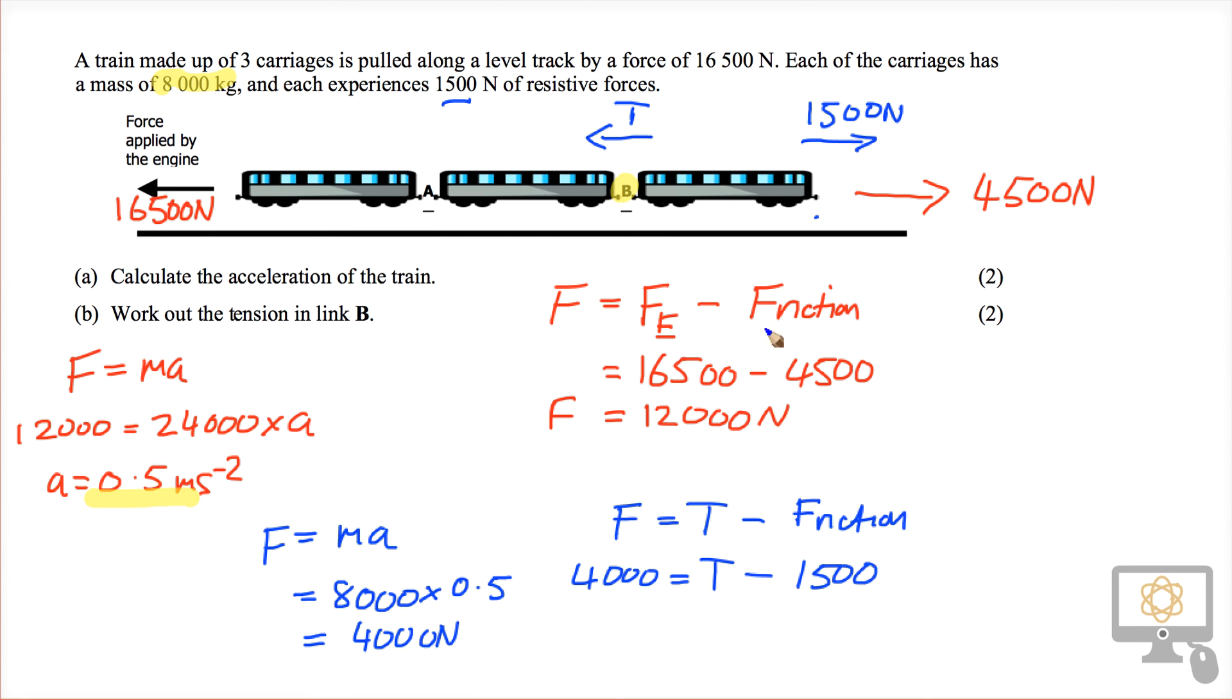That's for this carriage alone, remember. We can easily solve this sum. The tension has to be 5,500 newtons, and that's our answer.